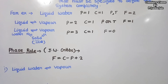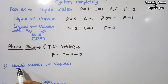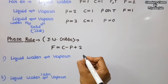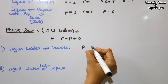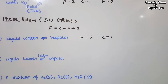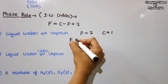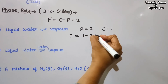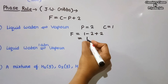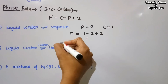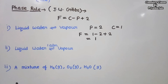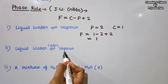By this formula we can calculate the degree of freedom. For example, when liquid water and water vapors are in equilibrium: phases = 2 (liquid and vapor), component = 1 (H₂O). So F = C − P + 2 = 1 − 2 + 2 = 1. The degree of freedom is one, meaning the system is univariant — we can vary either pressure or temperature, but not both.